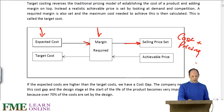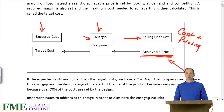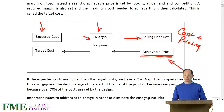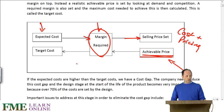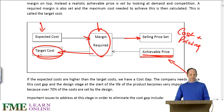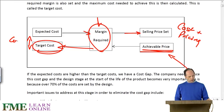With target costing, we have the same connection but working the other way. We start with the price that we feel is reasonable — perhaps by looking at what customers are prepared to pay, or by looking at competition and the price in the marketplace generally, possibly setting a price a little below that to gain market share. We then take the margin required and knock that off to come up with the target cost. The difference between the target cost and the expected cost, if there is a difference, is called the cost gap.